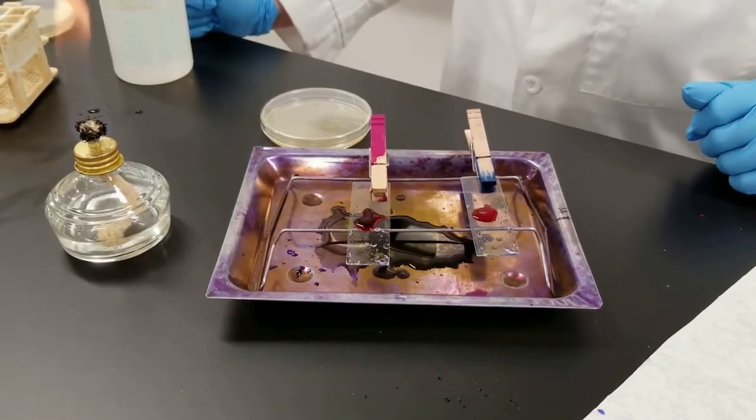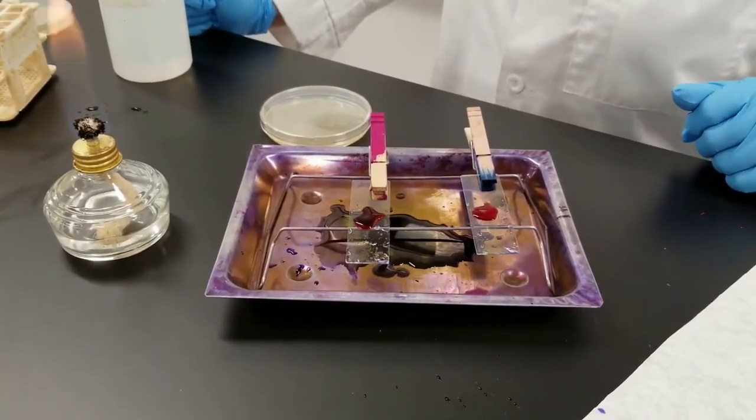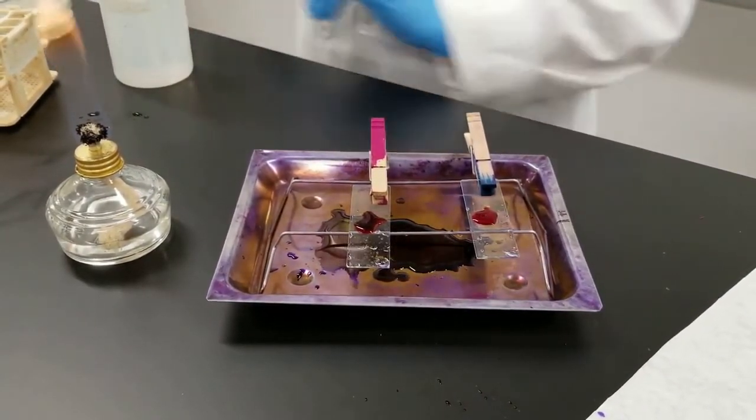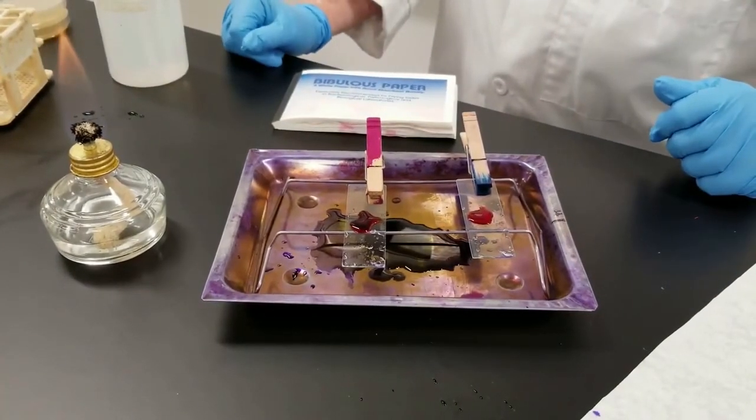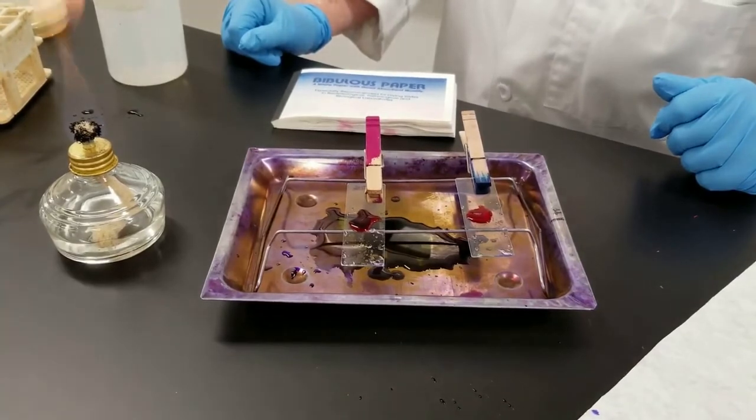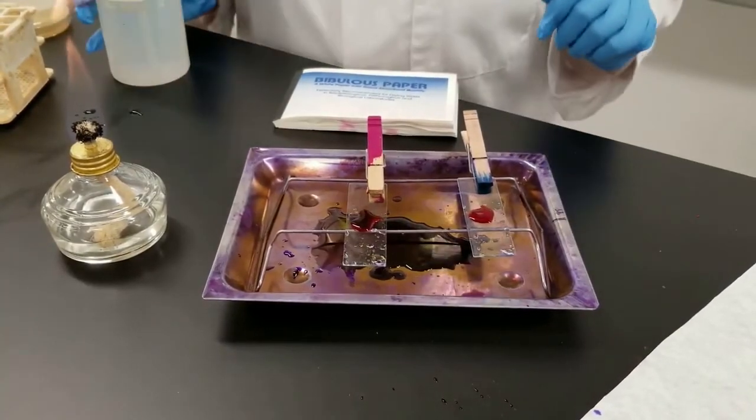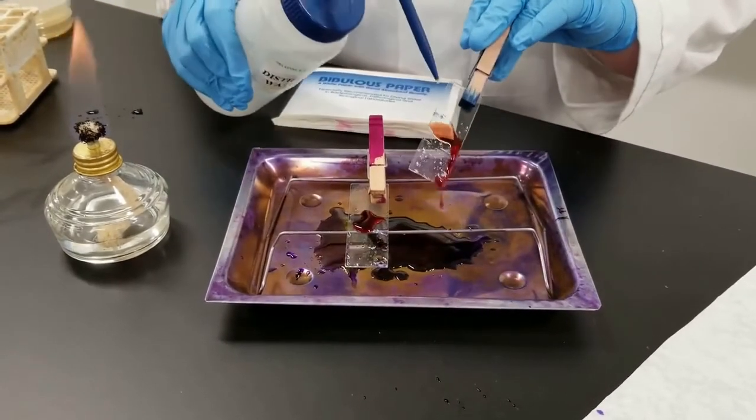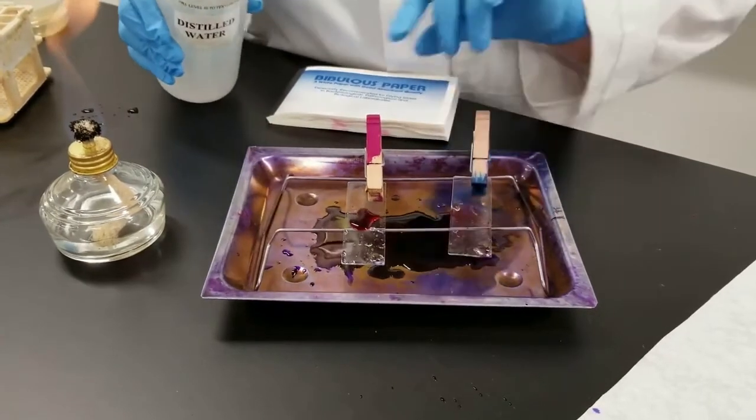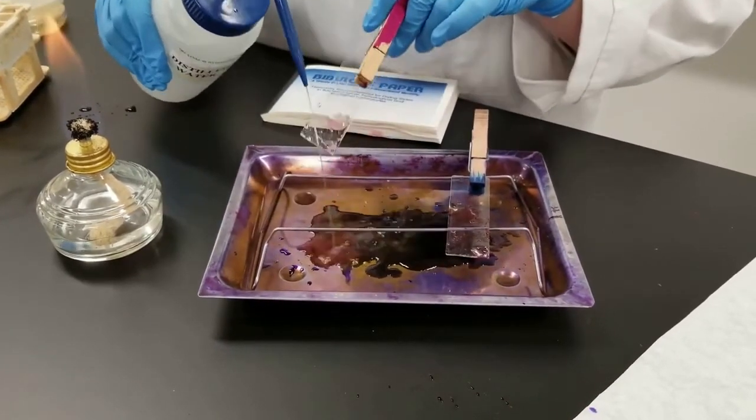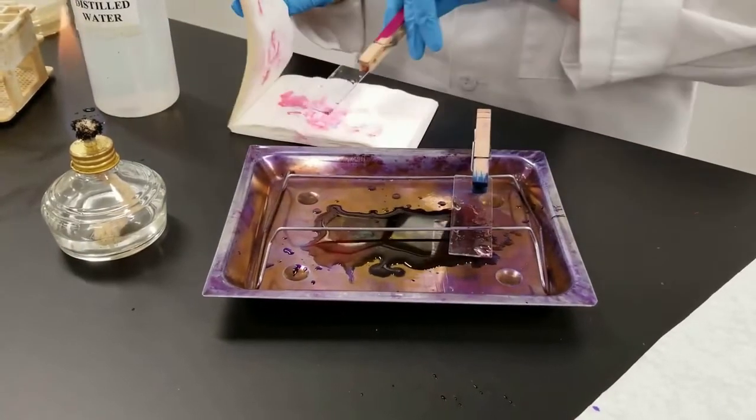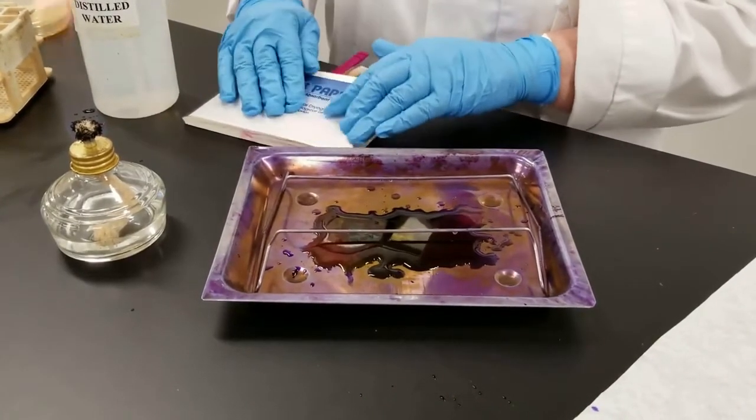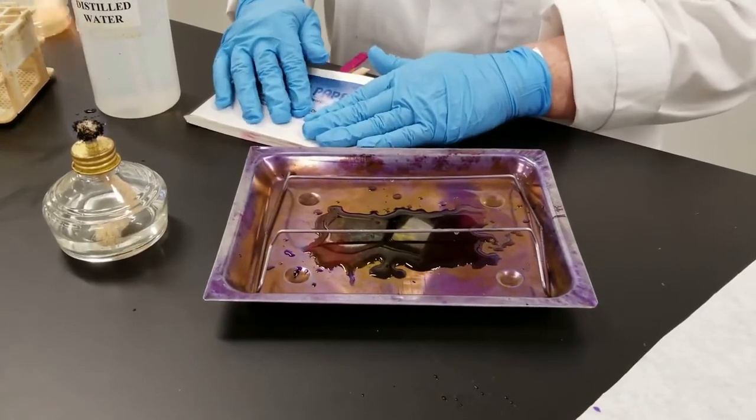When we are done with the safranin red, we will rinse it off, and then we will blot the slides in the bibulous paper as we've done with simple stains, spore stains, etc. So now we will rinse off this final step, and we will just blot them in the bibulous paper. Just be gentle as you do that. Let them dry for viewing later.